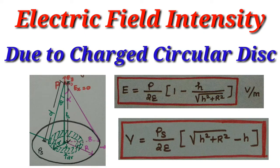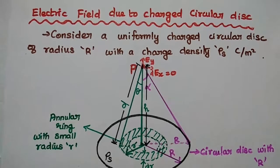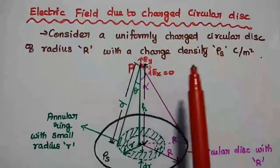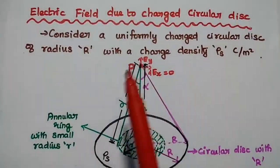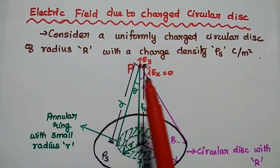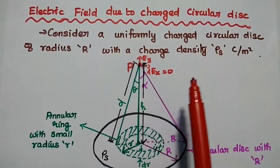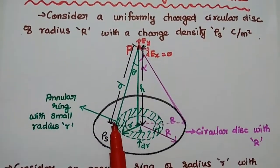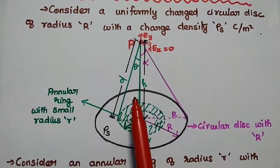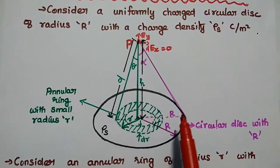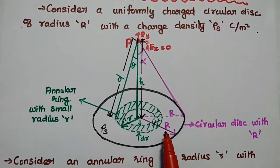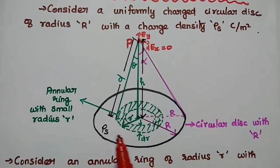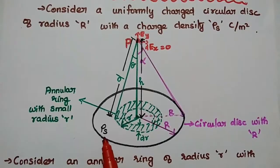Dear students, now we are going to discuss the electric field due to a charged circular disk in detail. Consider a uniformly charged circular disk of radius capital R with a charge density rho s. In this diagram, we are going to take a circular disk with radius capital R and charge density rho s.